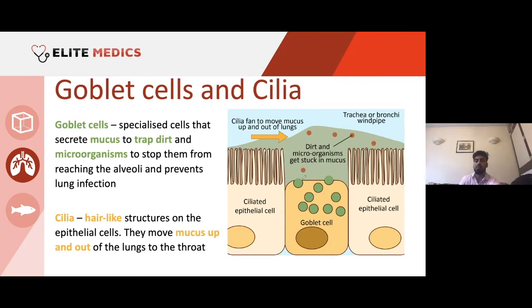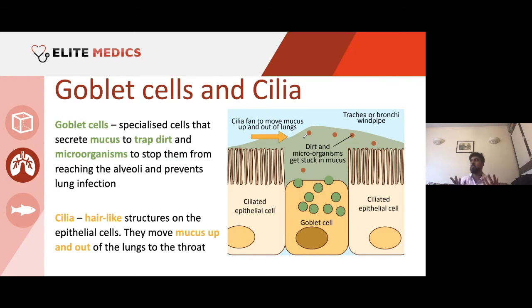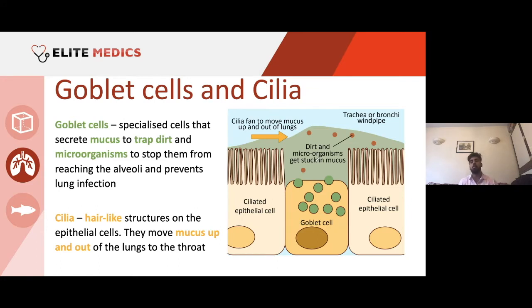The dirt and microorganisms get stuck in the mucus, and then the ciliated cells, with their hair-like projections, waft the mucus upwards and out of the lungs towards the throat. Once it reaches the mouth, you can re-swallow it or spit it out. If re-swallowed, stomach acid and proteases like pepsin will break down the proteins in the microorganisms, killing the pathogen. So goblet cells play a big role in our immune defence system.